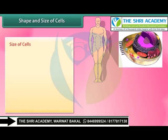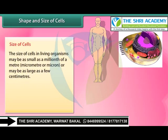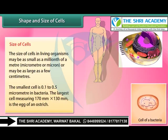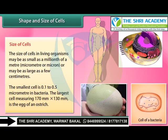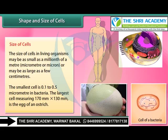The size of cells in living organisms may be as small as a millionth of a meter, that is a micrometer or micron, or maybe as large as a few centimeters. The smallest cell is 0.1 to 0.5 micrometers, found in bacteria. The largest cell, measuring 170 mm by 130 mm, is the egg of an ostrich.